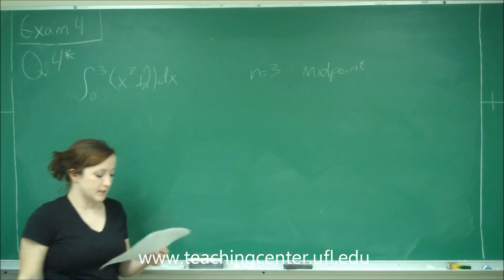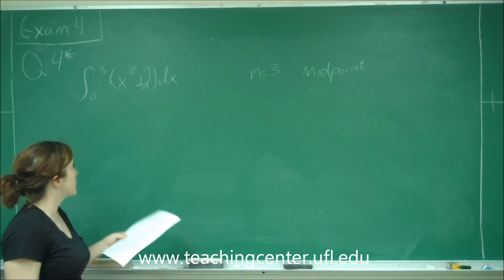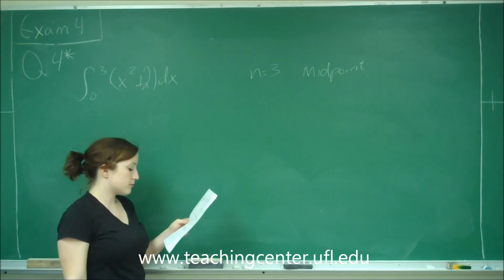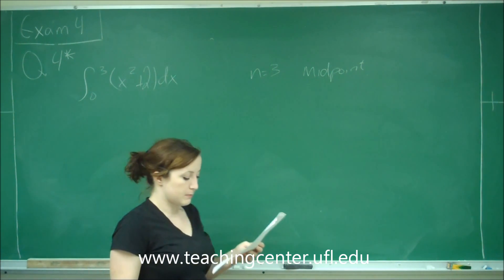This is question number four on the tariff, and it says find a Riemann sum which approximates the integral from zero to three of x squared plus 2 dx using three subintervals of equal width and letting x sub i equal the midpoint of the subinterval.